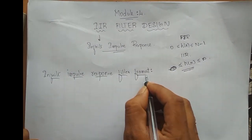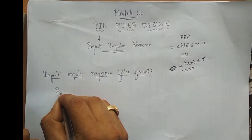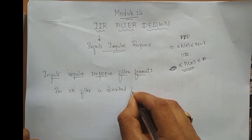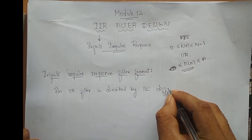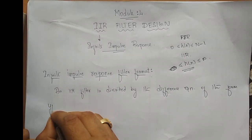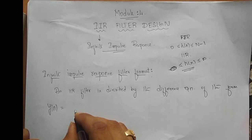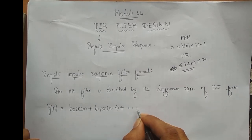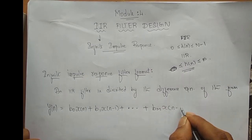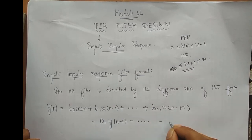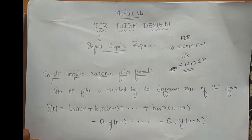An IIR filter is described by a difference equation of the form: Y(n) = B0·X(n) + B1·X(n−1) + ··· + Bm·X(n−m) − A1·Y(n−1) − ··· − AN·Y(n−N). This is the difference equation of an IIR system.